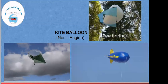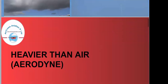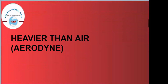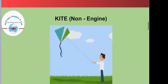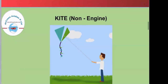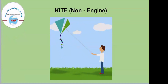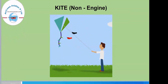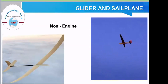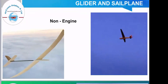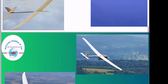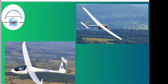That was all about lighter-than-air aircraft. Now we will proceed with the heavier-than-air category. The first type here is the kite, which is non-engine — it doesn't use any engine and is simply used in the direction opposite to the wind. Next are gliders and sailplanes, which also do not use any engine. These are non-engine propelled aircraft, and here we have recent photographs of a sailplane.